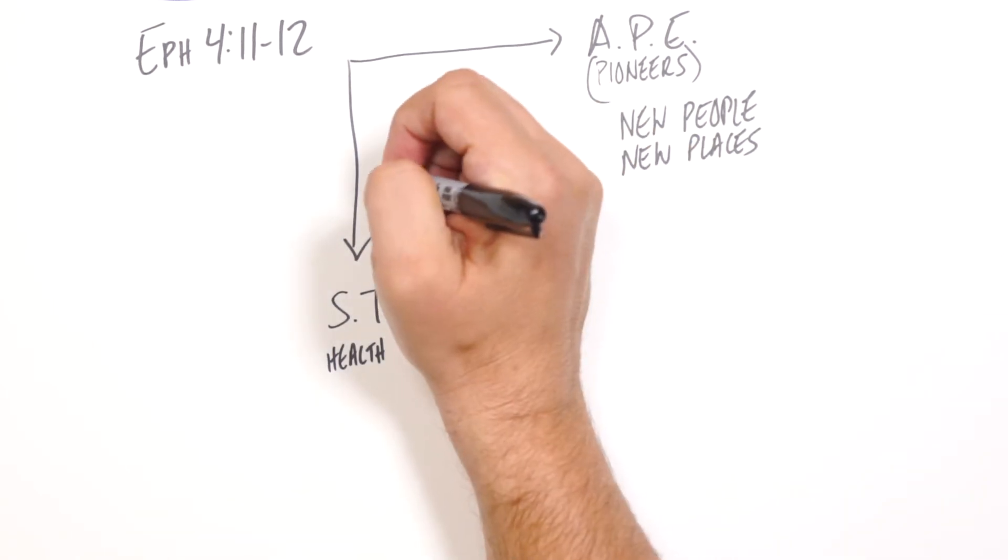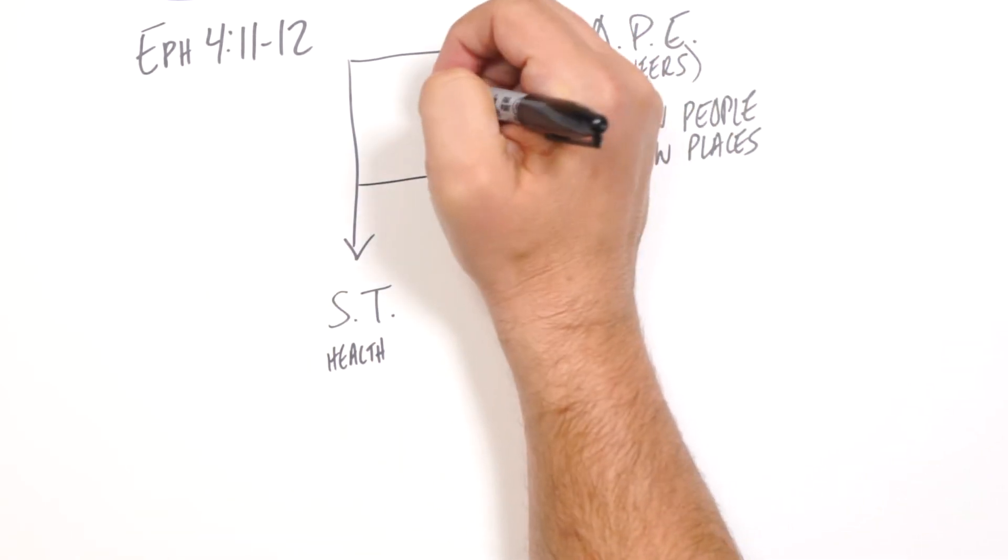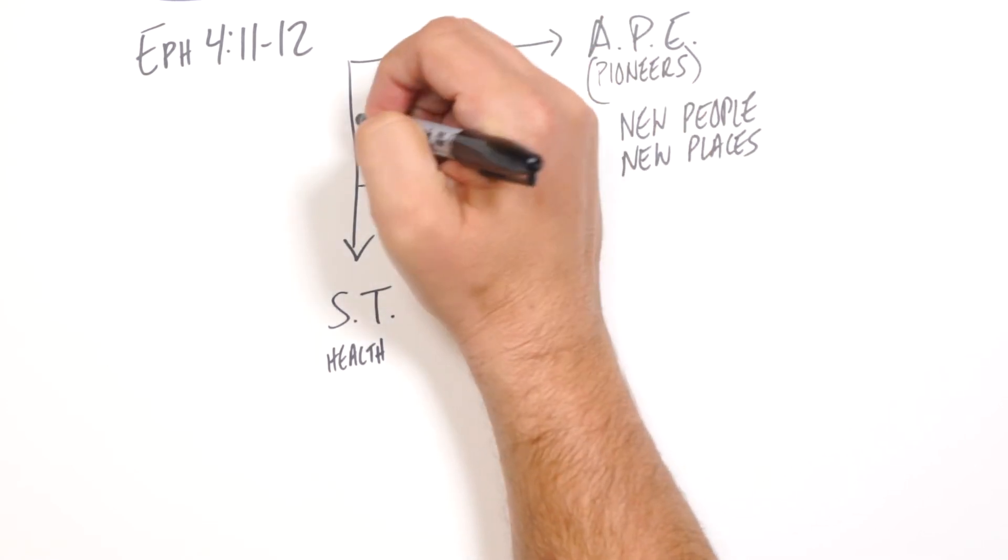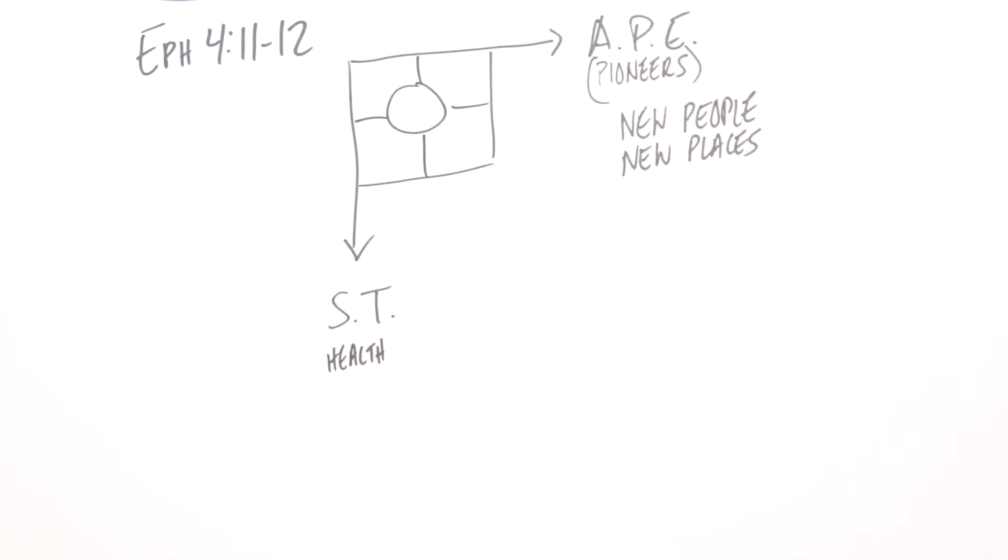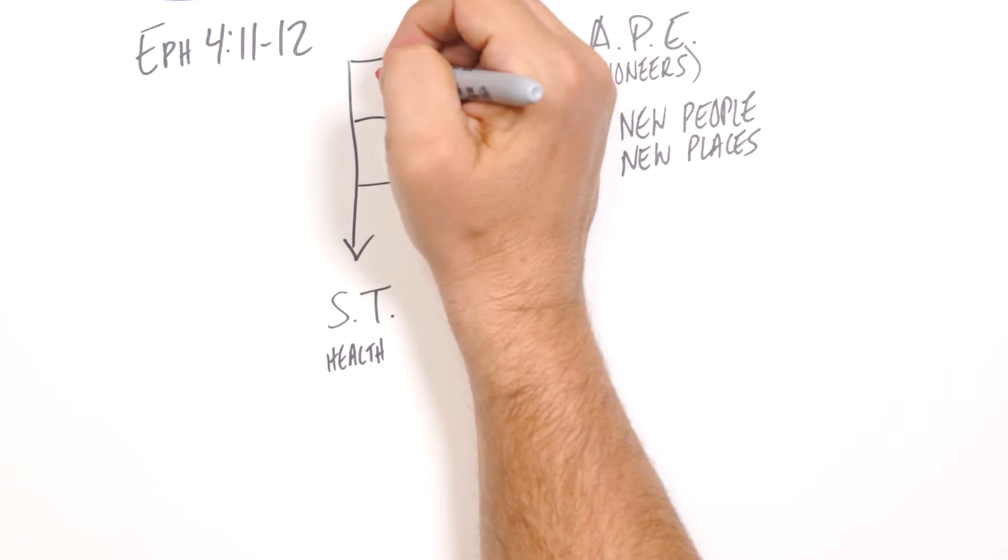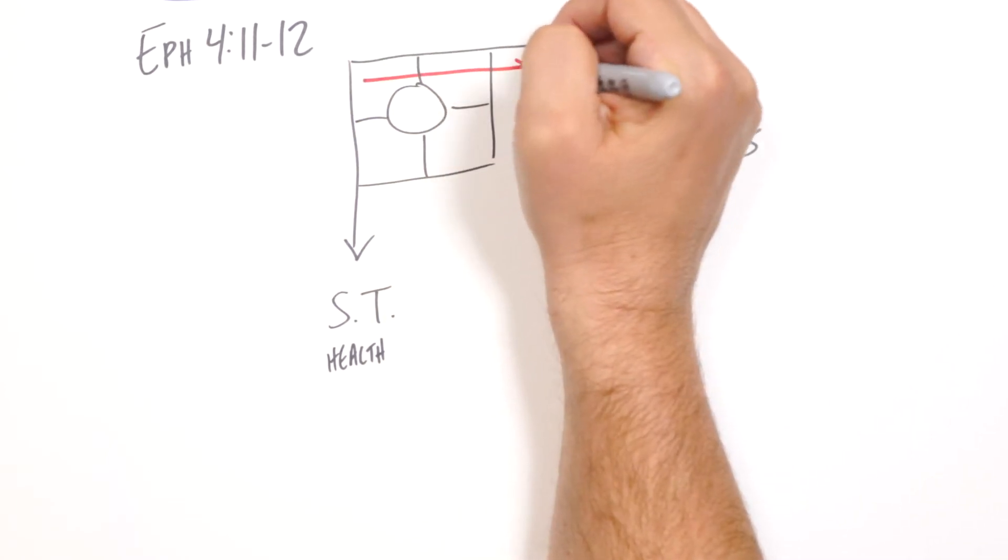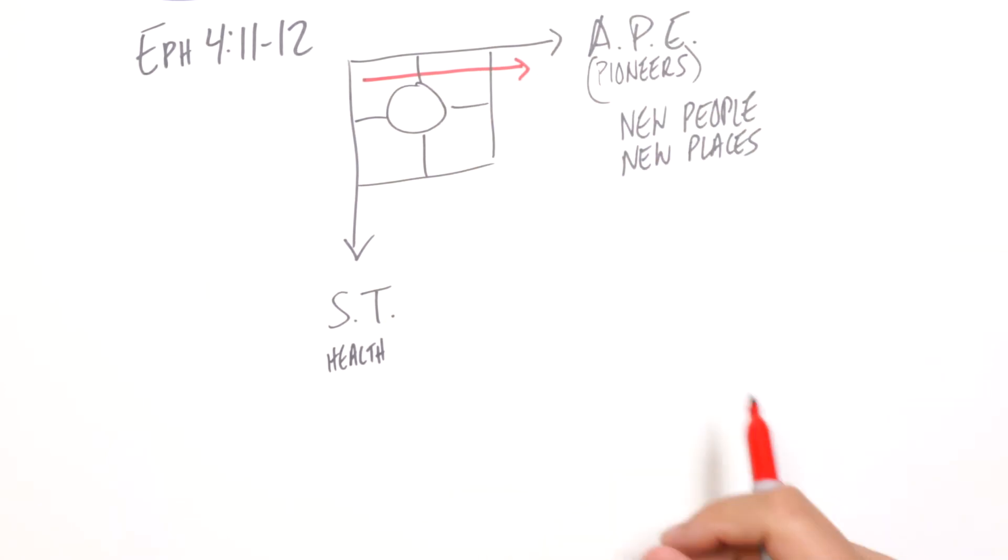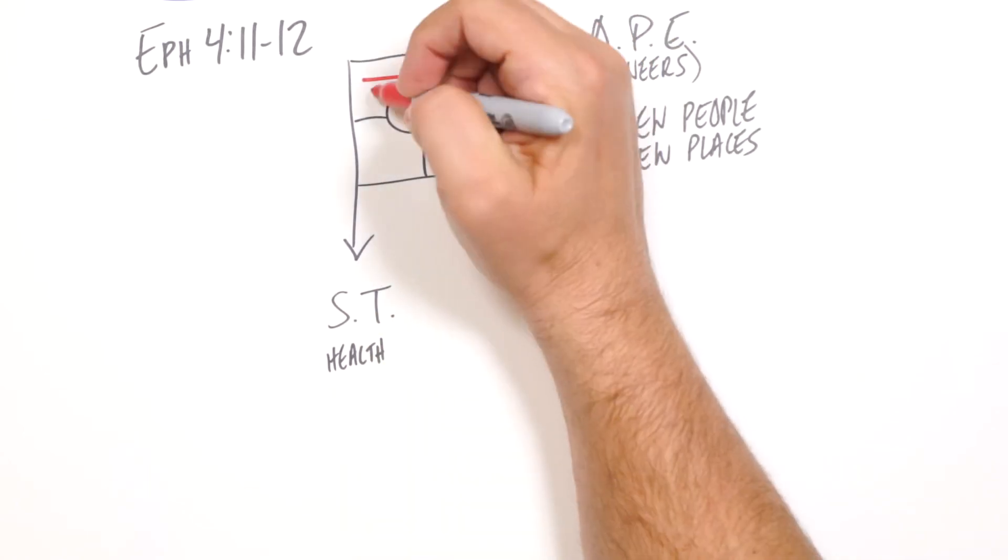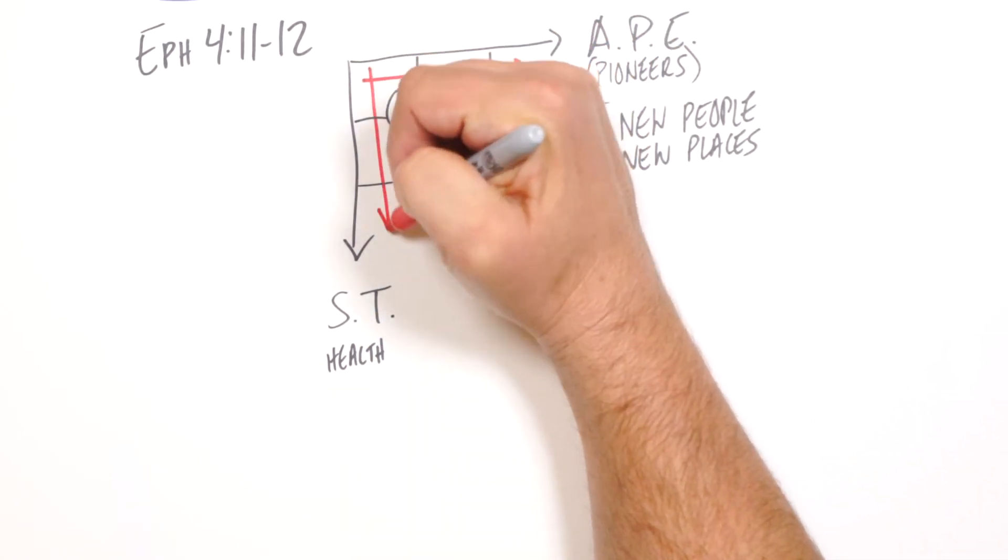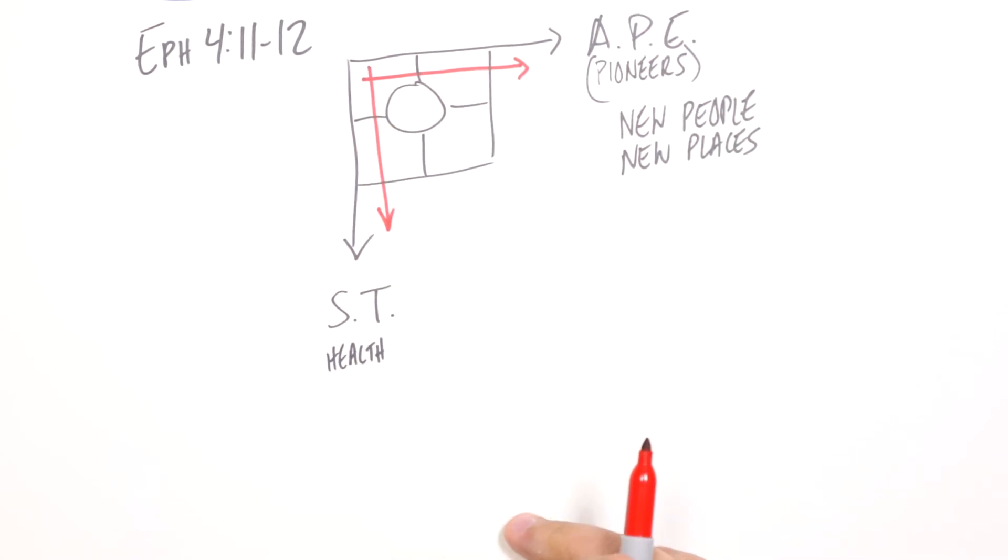If we were to draw a four fields diagram here, your APEs are going from the empty field of lostness to field two of evangelism, the gospel. Your shepherd teachers are going from the empty field of lostness to field four, getting to church.